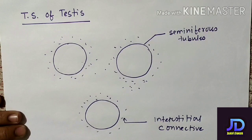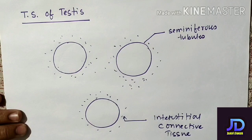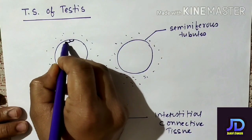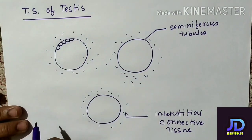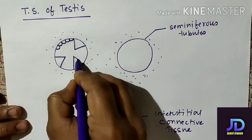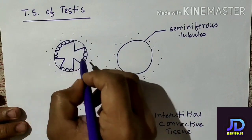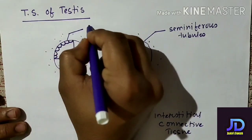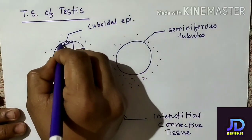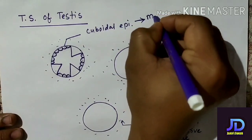Now these seminiferous tubules are lined with germinal epithelium. In this germinal epithelium there are two types of cells. Most of these cells are cube-like cells, called cuboidal epithelium.